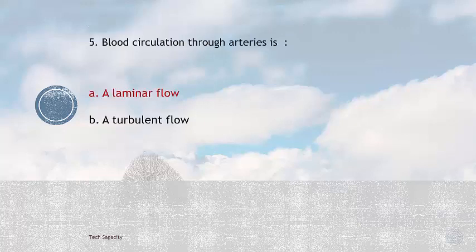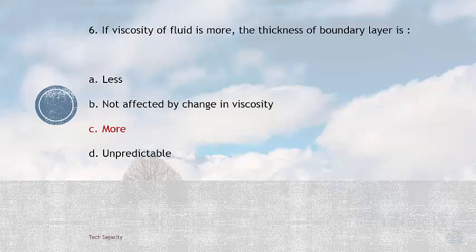Blood circulation through artery system in the body - the type of flow is laminar flow, definitely not turbulent flow. Next question: If viscosity of fluid is more, the thickness of boundary layer is more. If viscosity is more, resistance to flow is more, so obviously the thickness of the boundary layer will be more.